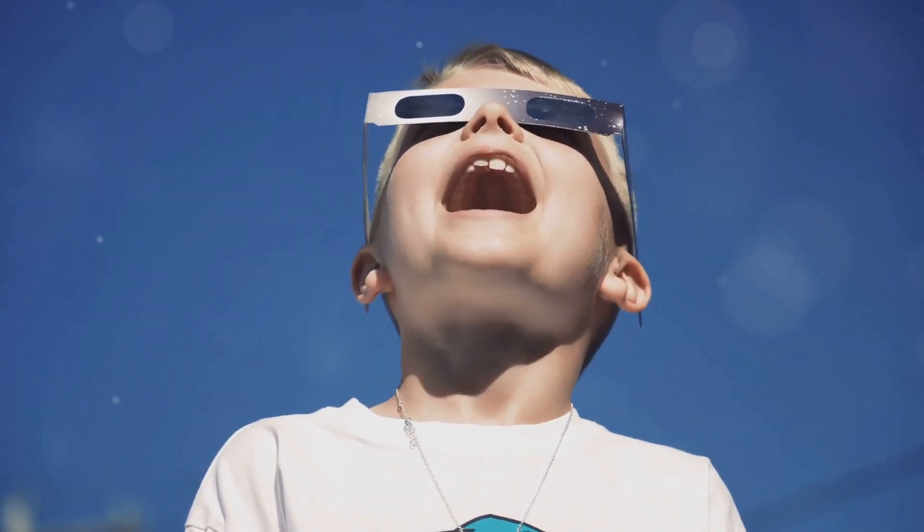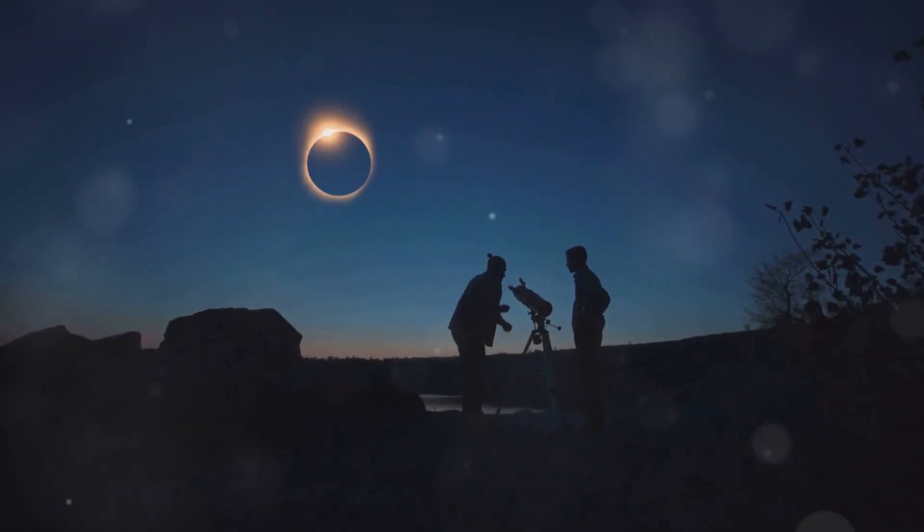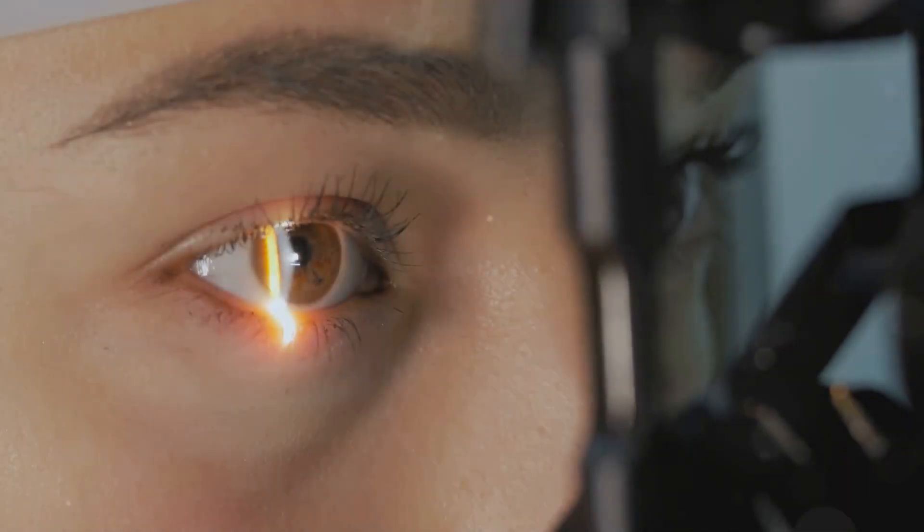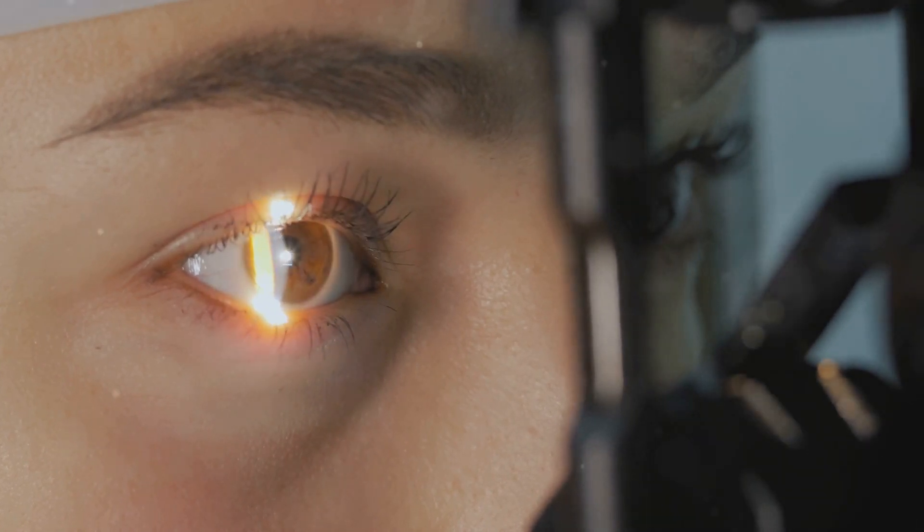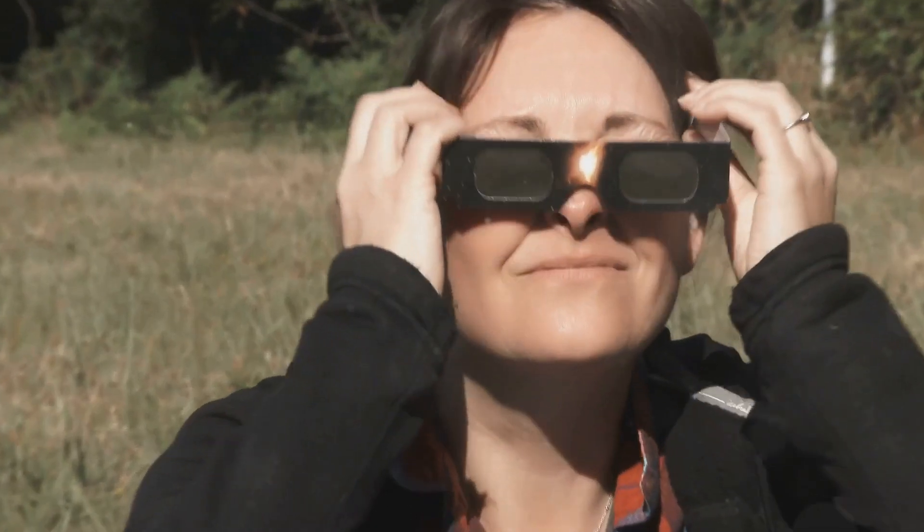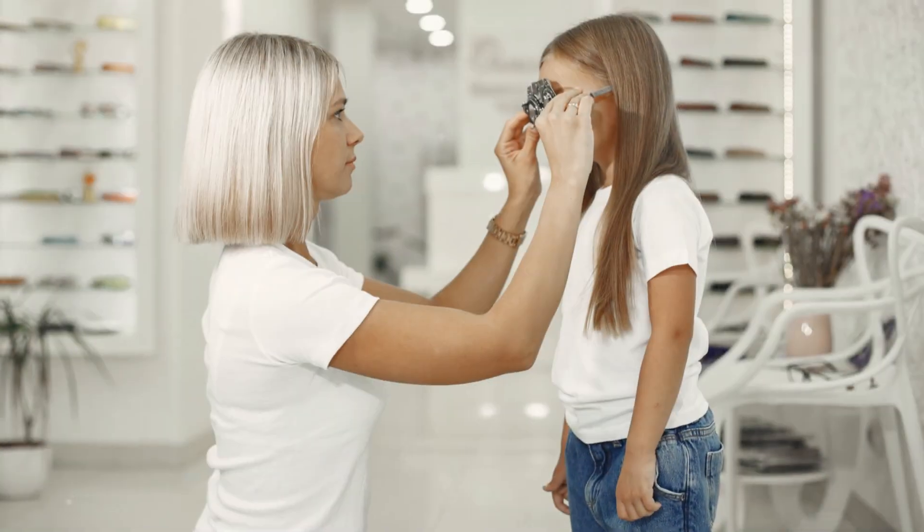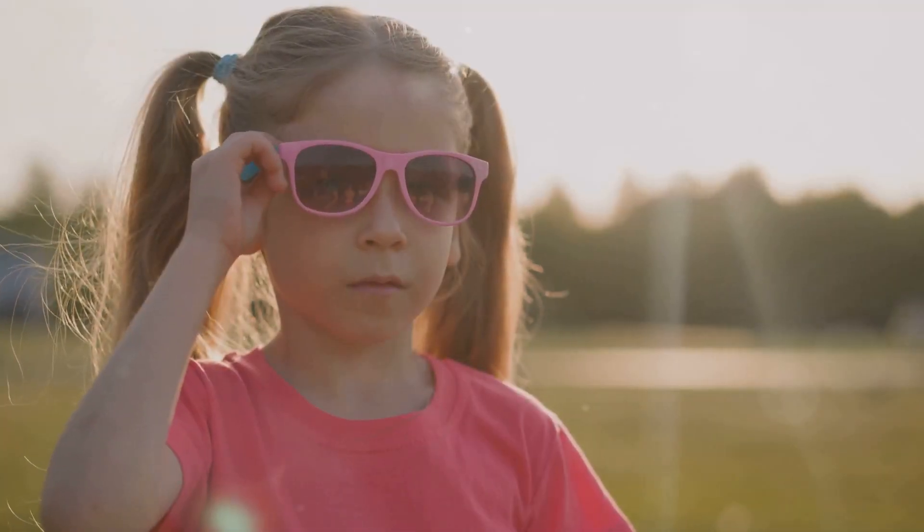Safety first, eclipse fun second. Looking directly at the Sun, even during an eclipse, can hurt your eyes. It's like staring at a bright light bulb for too long. So to watch a solar eclipse safely, you need to use special glasses or viewers. Ask a grown-up to help you find some. Never look directly at the Sun without proper eye protection. Remember, safety first so you can enjoy the eclipse and keep your eyes healthy.